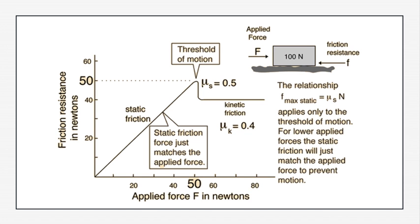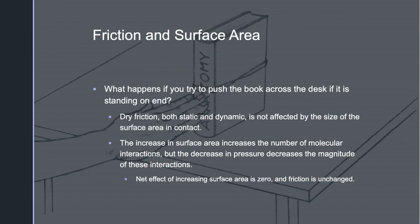This graph depicts the changes seen in force application that result in overcoming the static friction force, resulting in dynamic or kinetic friction. The vertical axis represents the friction resistance in Newtons, and the horizontal axis represents the applied force in Newtons. The static friction line represents equal application of force to the static friction. The threshold of motion is the point at which applied force overcomes static friction force.